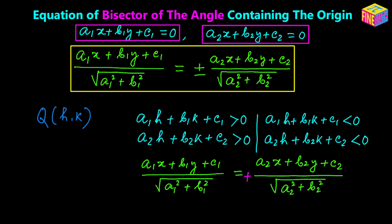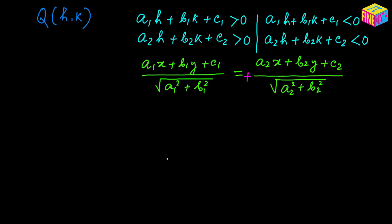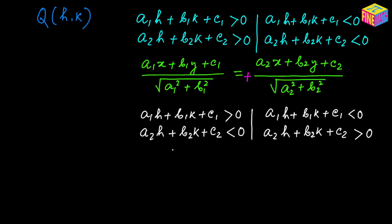If the expressions give us values of opposite sign — for example, the first one is positive and the second is negative, or vice versa — it doesn't really matter which way. If they give values of opposite signs, then the equation of the bisector uses the minus sign on the right-hand side.